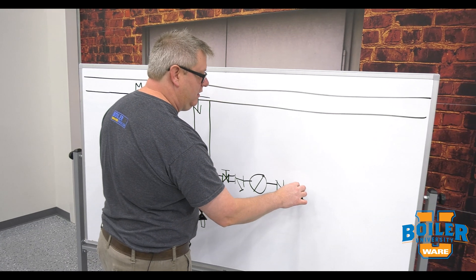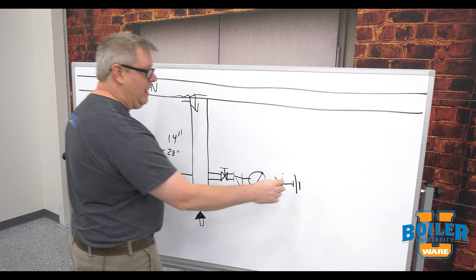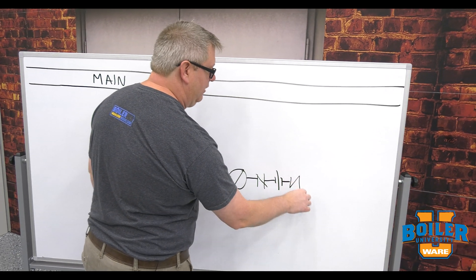So it's just there to make sure everything only goes in the correct direction. We're generally going to have a union so that we can disassemble this as needed and then we'll have another isolation valve.